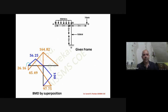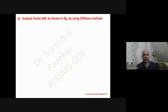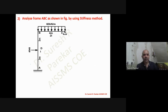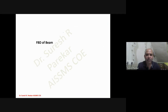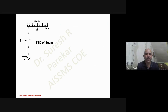Moving to Problem 2: kinematic indeterminacy is two — we have θB and θC. Non-sway frame, so no delta; DK = 2. We draw the free body diagram showing reactions RC and HC.